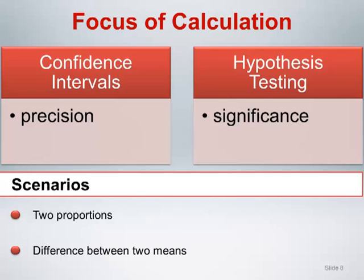For our case illustration, the primary outcome is pregnancy rate, a dichotomous outcome that will be summarized in each group by a proportion. Therefore, the test of interest is a comparison of two independent proportions.